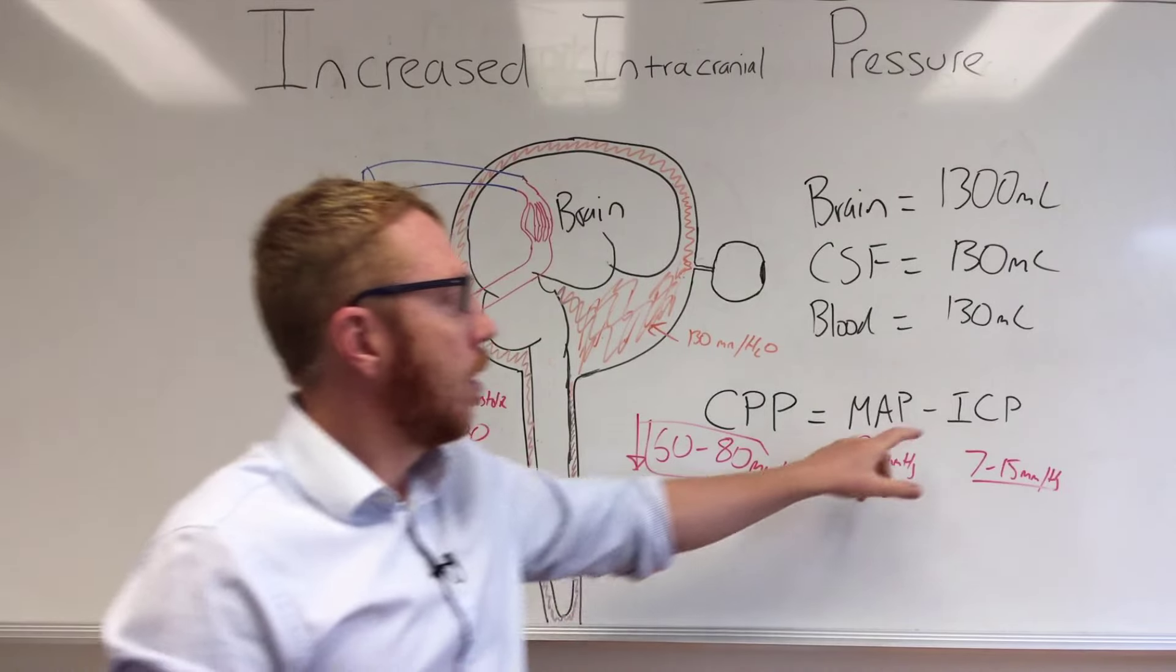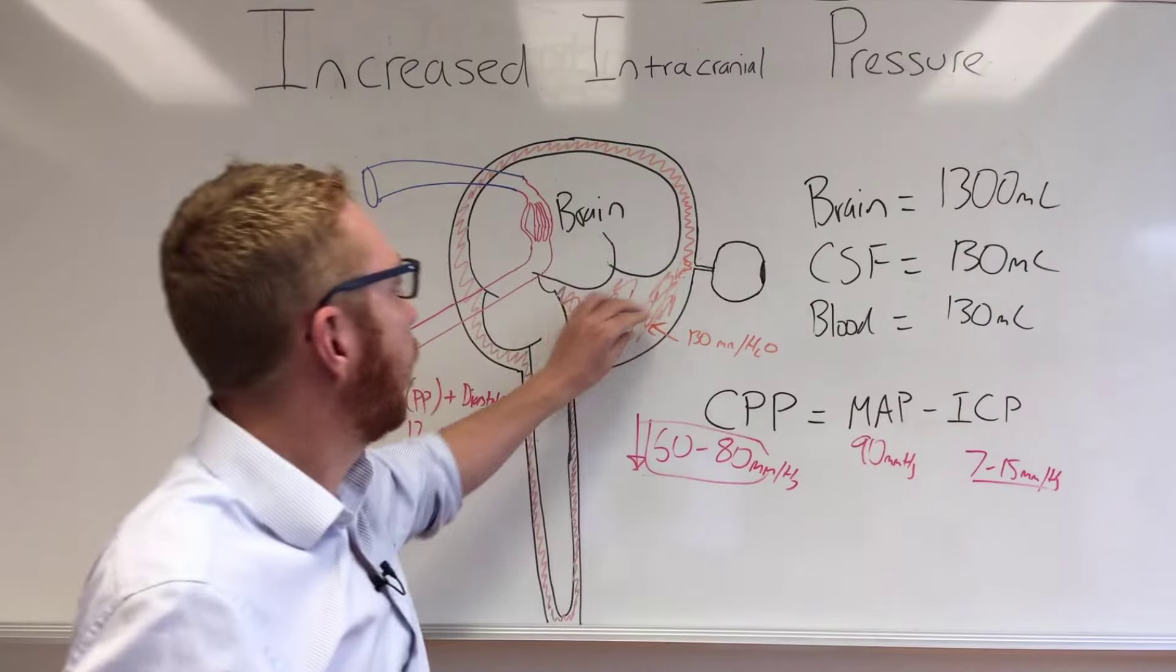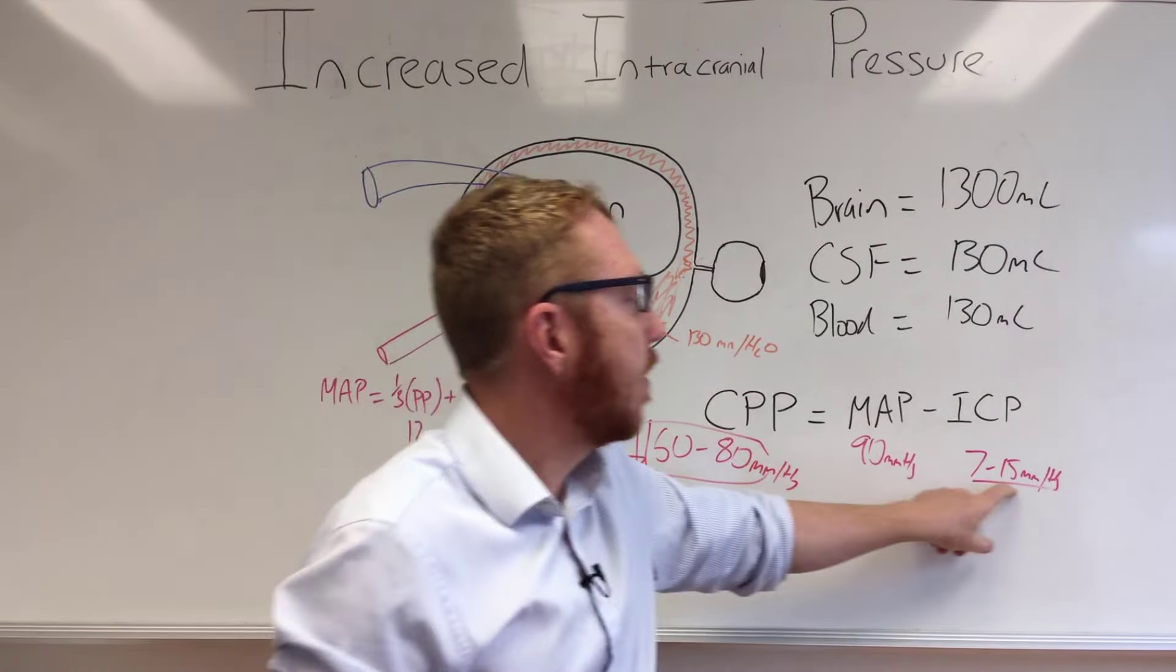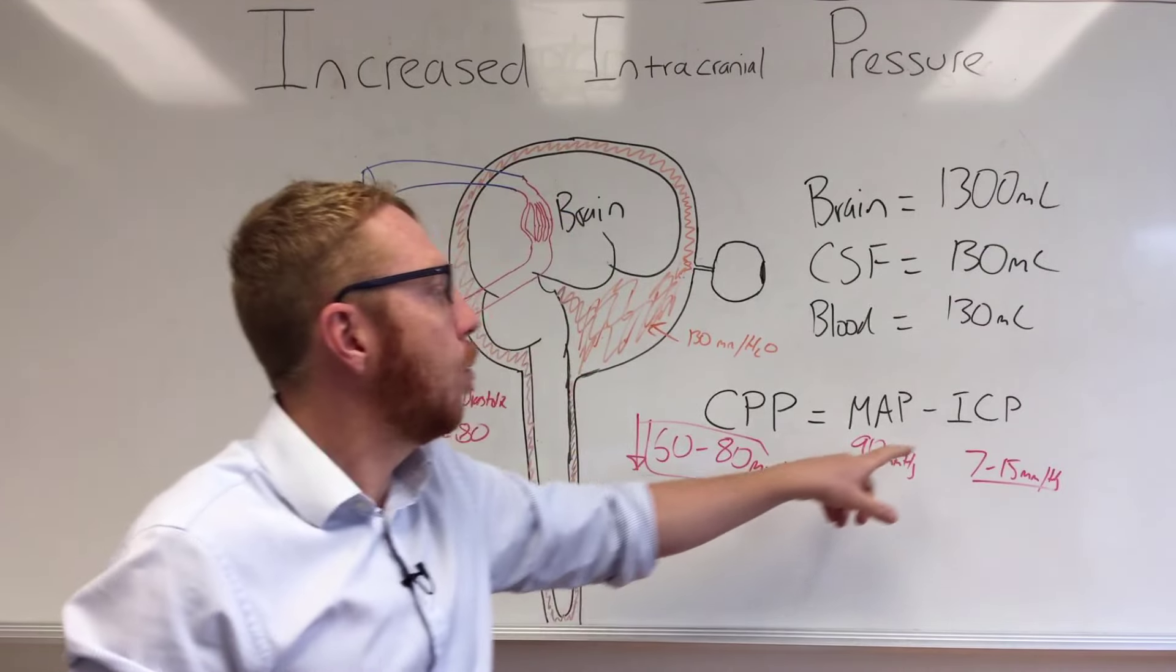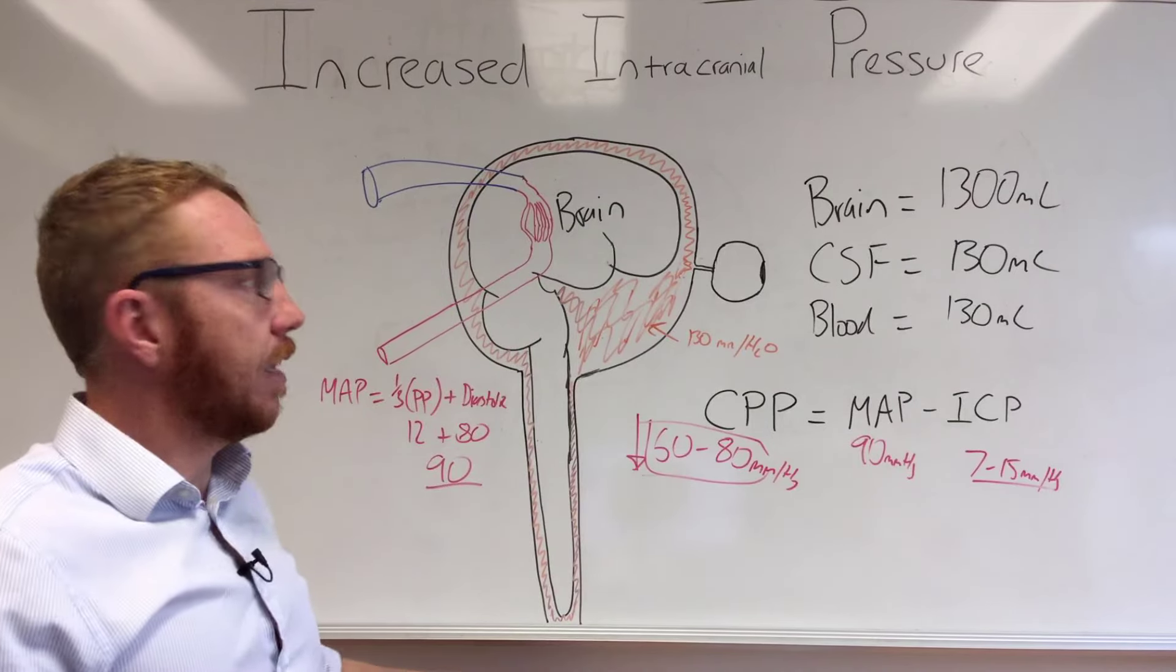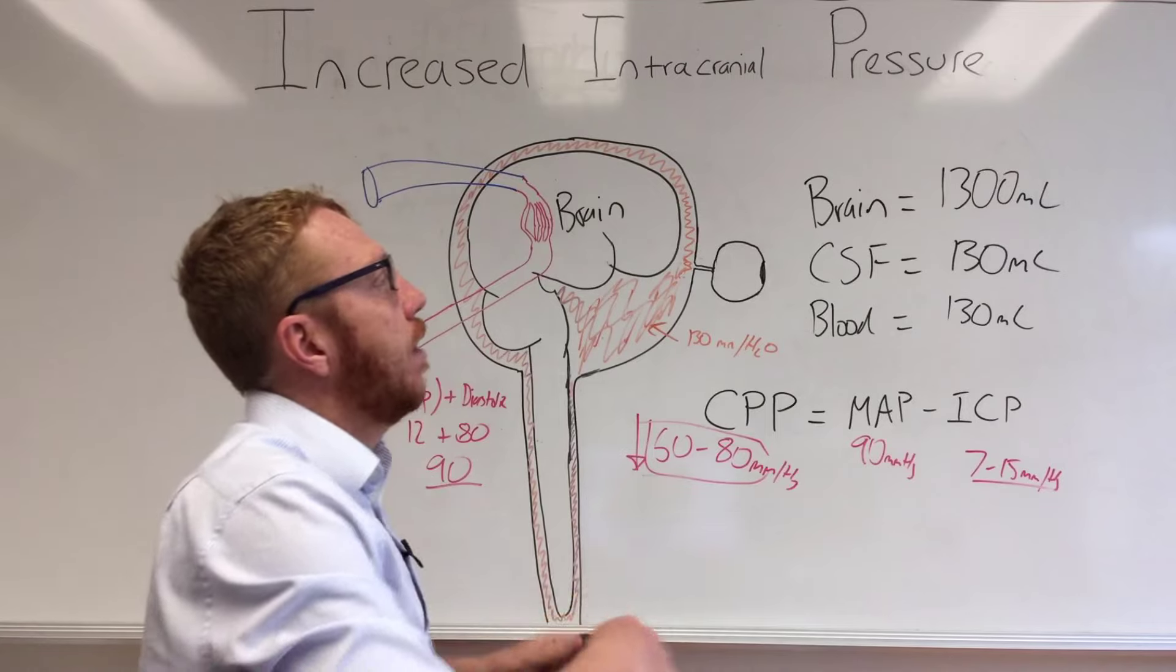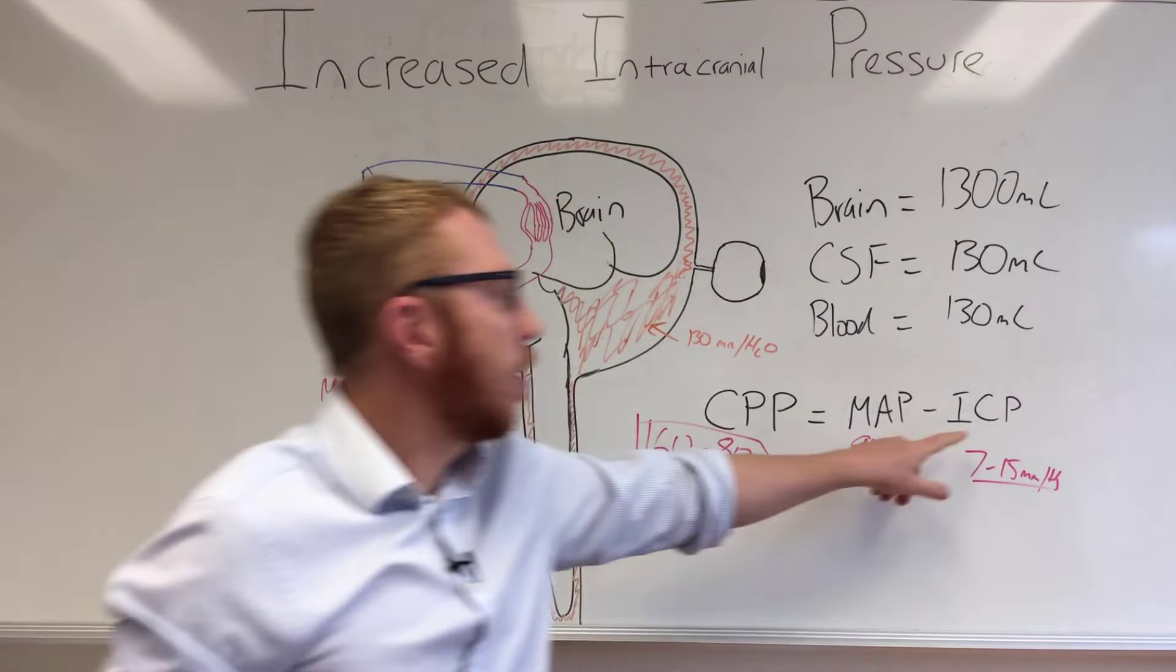Before we jump into ICP, we now know what intracranial pressure is. It's essentially the pressure outside and that's generally sitting with the CSF and the pressure itself is normally 7 to 15 millimeters of mercury. But what are the things that are likely to increase it? Let's work off the Monroe Kelly hypothesis and it's basically saying if any one of those three things increase, this is going to increase.